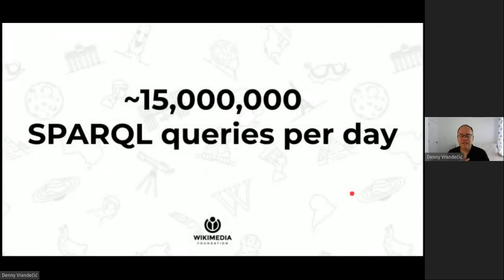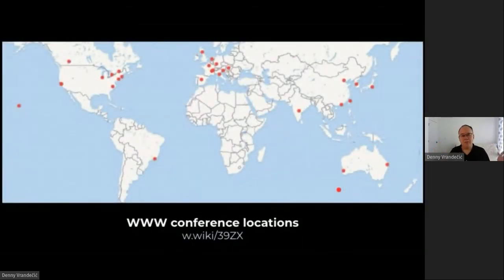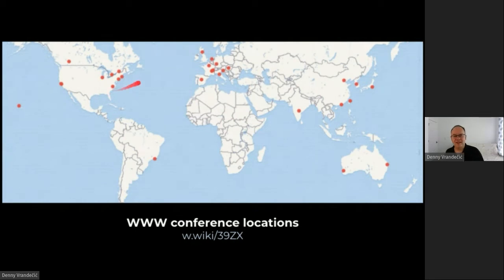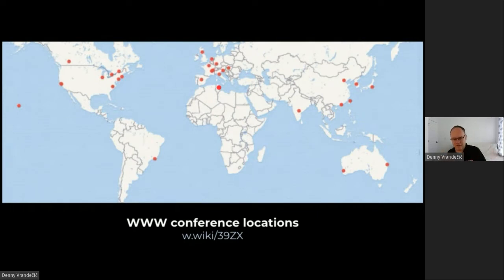Wikidata offers a SPARQL endpoint — a query language over RDF — that answers more than 15 million queries every day. It can answer queries like: show me a map of all the conference locations of the Web Conference. There's Seoul, Beijing, Hyderabad, Edinburgh — which was my first WWW — and now we're in Ljubljana. This map is created without writing a single line of code. It's just a query to Wikidata that gets coordinates and pulls map data from OpenStreetMap, federating knowledge across the web of linked open data.